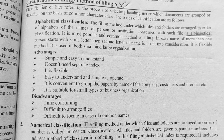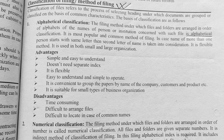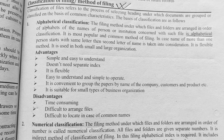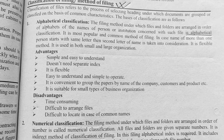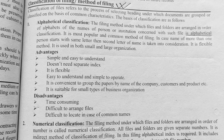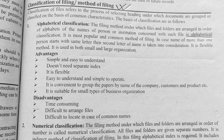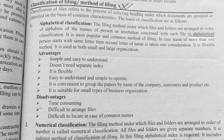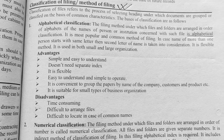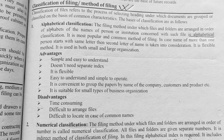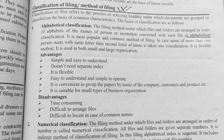Number one: alphabetical classification. Under this classification, the names of persons are classified according to their alphabet, such as A, B, or C. In the case where the names of more than one person start with the same letter, the second letter of the name is taken into consideration.